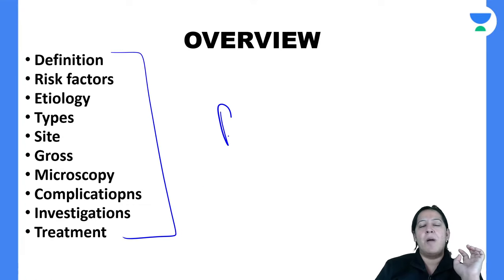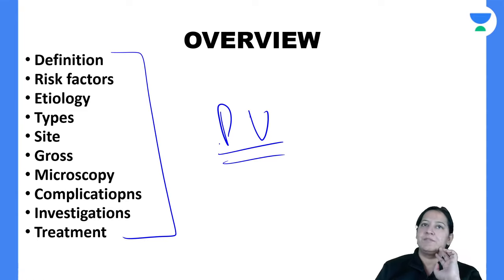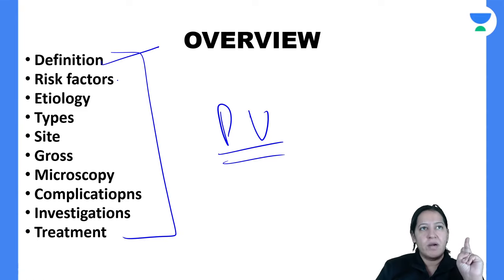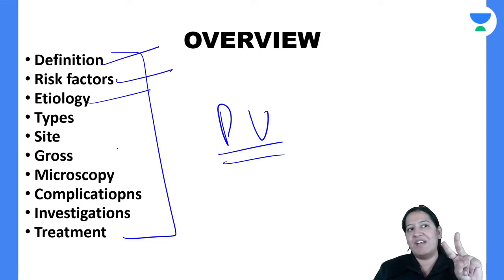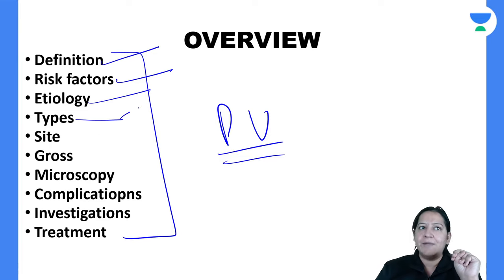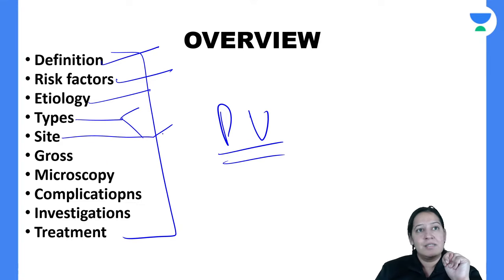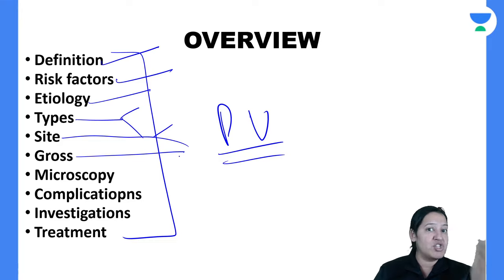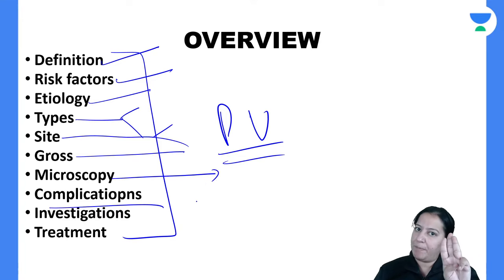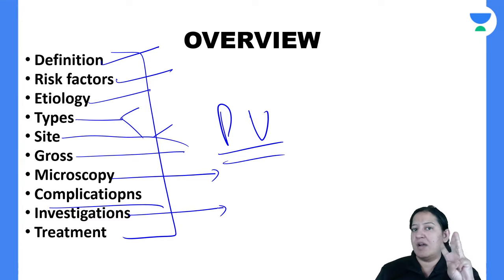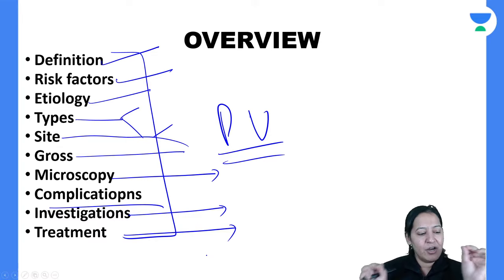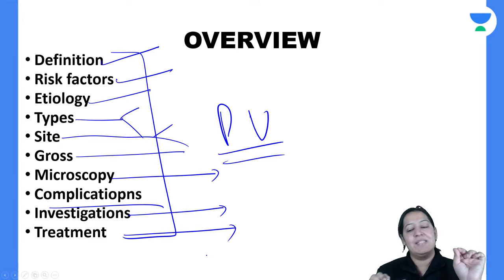I am done with peptic ulcer — the complete topic. You know the definition, risk factors, etiology (aggressive vs defensive factors), types (gastric and duodenal), clinical feature differences, most common sites, gross appearance (punched out vs rolled out margins), microscopy (four zones), complications (bleeding, perforation, malignant transformation), investigations (urea breath test, biopsy, culture), and treatment (triple therapy). The next topic is gastritis.